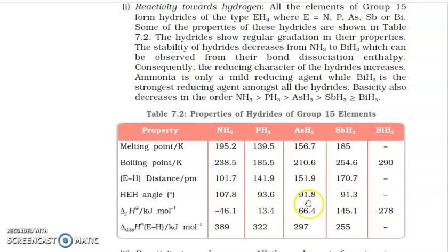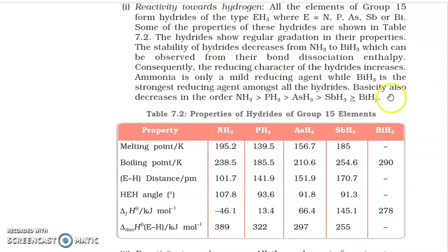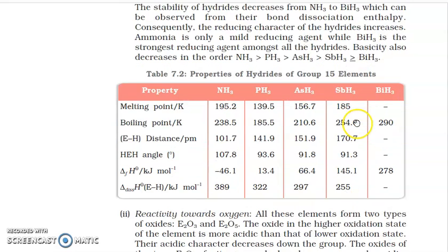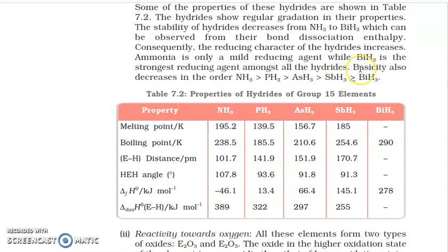So in the sequence of bond angles, NH3 has the highest bond angle. The reason: due to high electron density on the nitrogen atom. These types of questions are very common in exams.